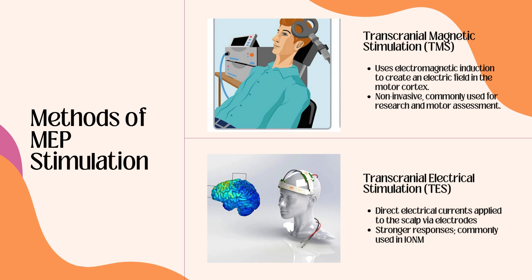Transcranial motor evoked potentials have been used during many different procedures which place the spinal cord or its vascular supply at risk. These can include orthopedic surgeries such as spinal deformities, thoracic trauma, fracture, or tumors, or cervical spine surgeries for decompressive and stabilization purposes. They also can include neurological surgery, for example intramedullary and intradural spinal cord masses, subcortical tumor resection, cerebral aneurysm obliteration, AVM obliteration, and tethered cord release. In vascular surgeries such as abdominal aortic aneurysms or carotid endarterectomy (CEA) surgeries, and additionally it can be used in interventional procedures such as aneurysm coiling, intracranial aneurysm embolization, and spinal AVM surgeries.